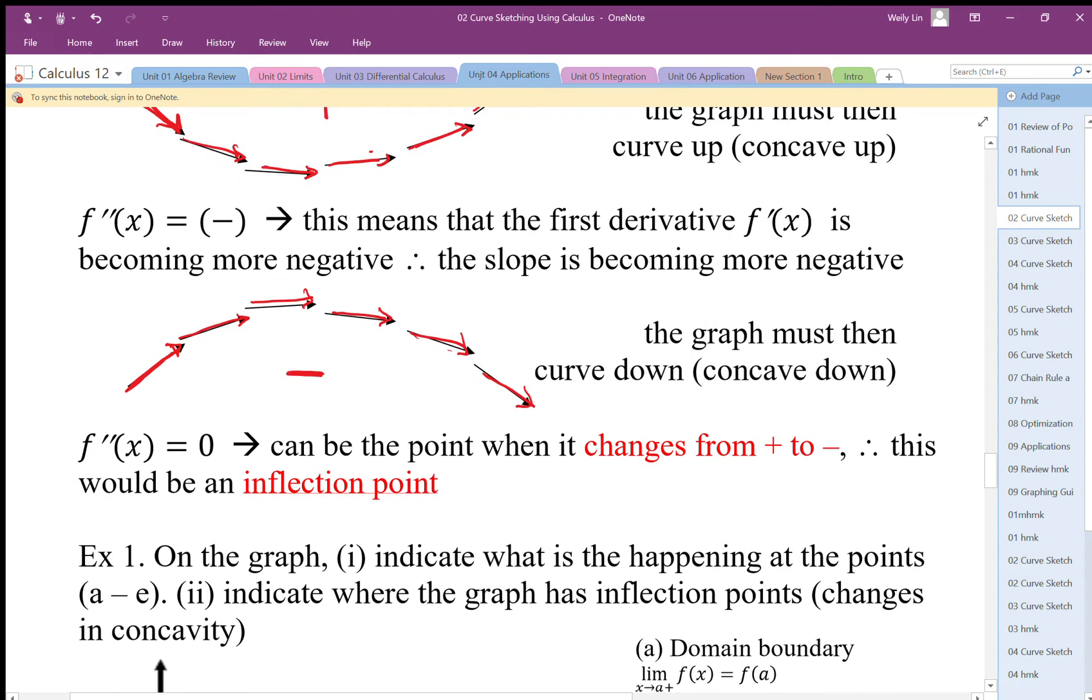Where the second derivative is equal to zero, this is a potential change of positive to negative concavity, or an inflection point. We have to be careful because we cannot assume that f double prime equals zero is an inflection point, but it's an indication that it could be, and we still have to check for concavity change.